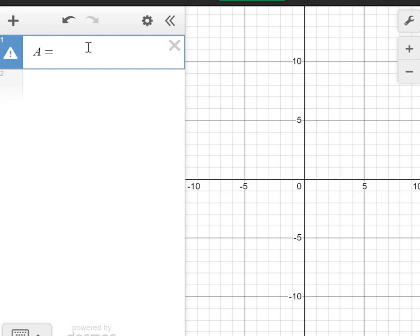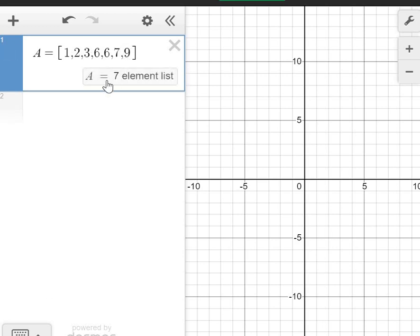And for one variable data set, there are specific functions in Desmos that you can use to find the median and the mean. So this is how you do it. Start with a capital letter. And I'm going to name our data set A. And we're going to start our data set with square brackets. And then we're going to just type in some numbers like 1, 2, 3, let's say 6, 6, 7, and 9. And we're going to close the bracket. So now notice that our data set for one variable has seven elements.